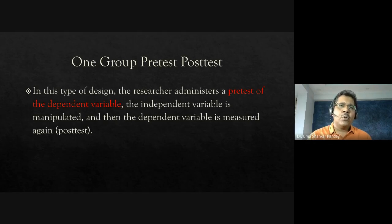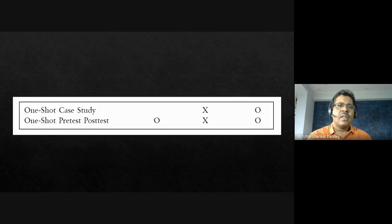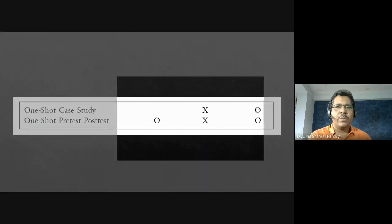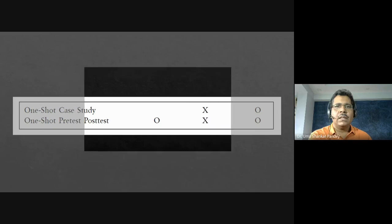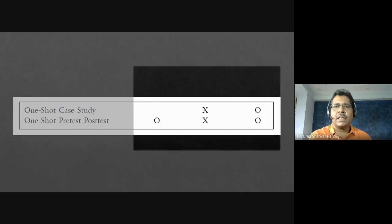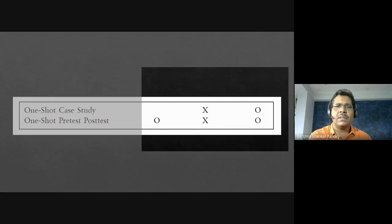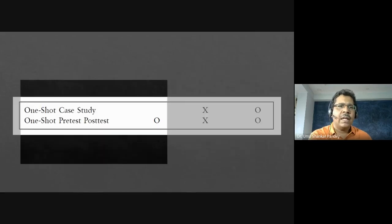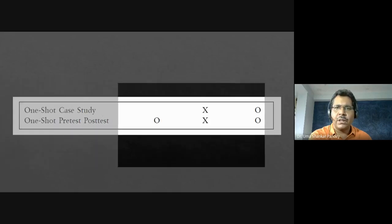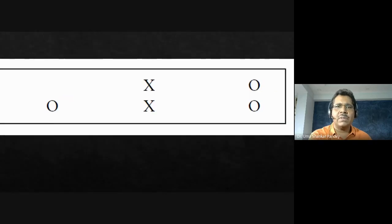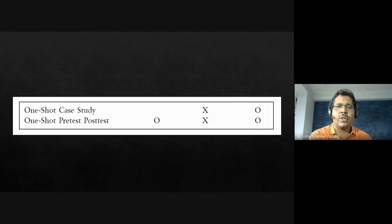In notation: the one-shot case study has only X followed by O — a condition and one observation, no randomization, no two groups. The one-group pre-test post-test is O1 → X → O2 — an observation before the treatment and an observation after. These are the two types of pre-experimental designs.